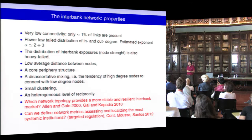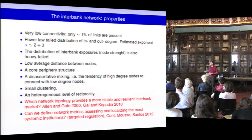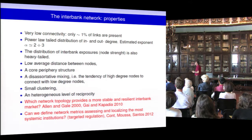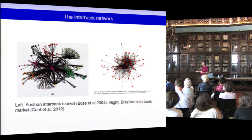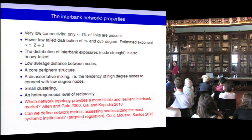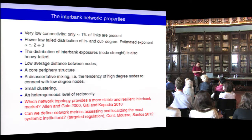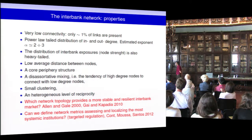A lot of literature has investigated the properties of the interbank network. For example, it is not very connected — despite the optimality of spreading risk widely, only about 1% of possible links are present: it's a very sparse graph. There is a strong heterogeneity in degree — probably power-law distributed — meaning some banks borrow and lend with many institutions while others have only one counterparty. There is also a core-periphery structure: a set of core banks that borrow and lend among themselves, and a periphery that only borrows and lends with core banks. This is typically observed in many financial systems.